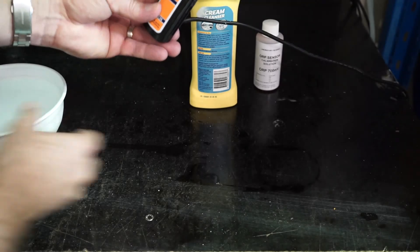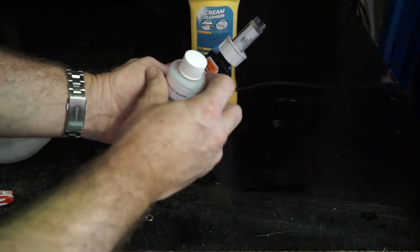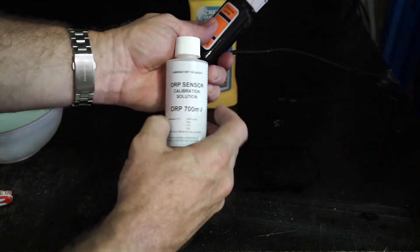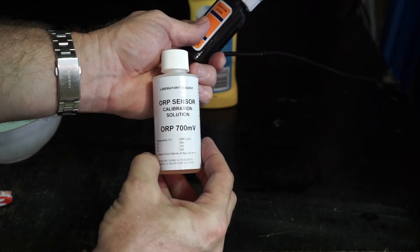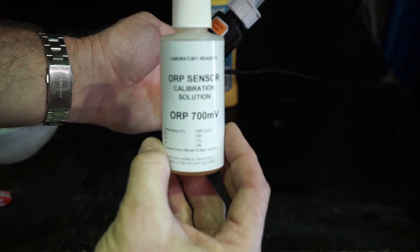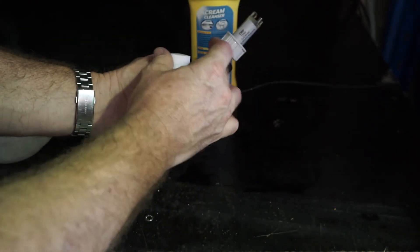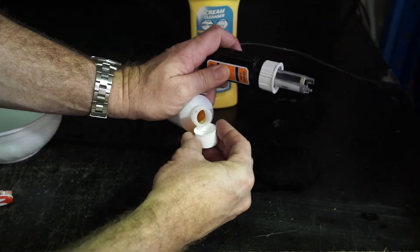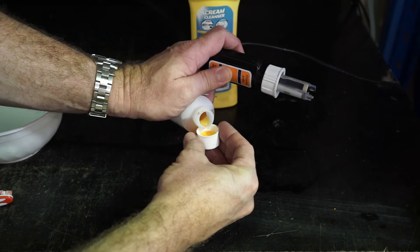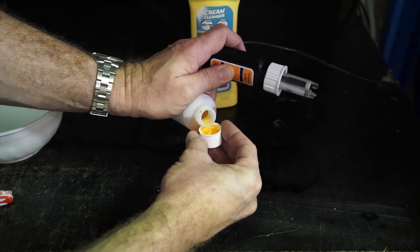From here, we will now open our ORP calibration solution, which is factory set to 700 millivolts. We will pour our solution in the top of the cap.